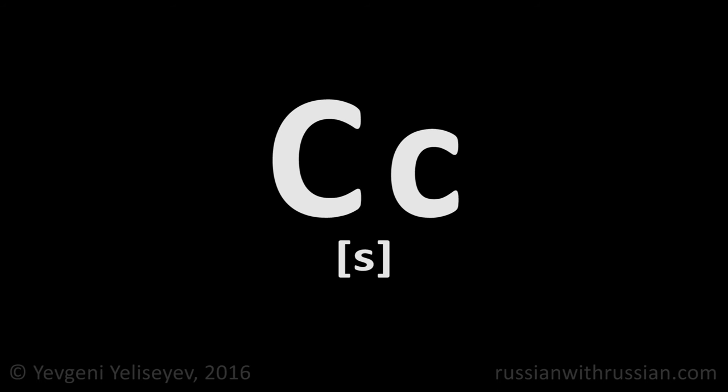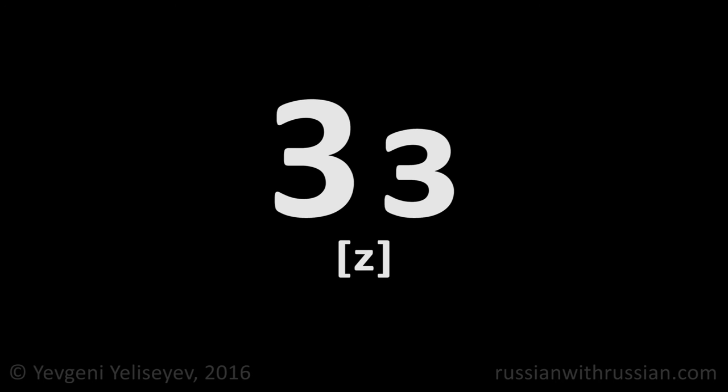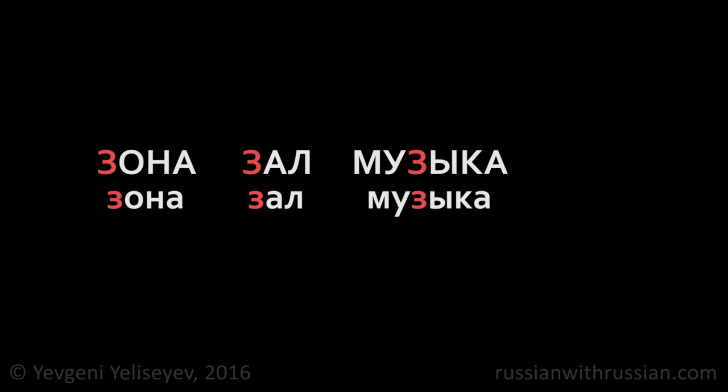This letter is called С. Normally it's pronounced as С. Unlike English, in Russian it never has the sound К. For example: СУМКА, СЫТЫ, САДЫ, АНАНАС. This letter, called З, is pronounced as З. Examples: ЗОНА, ЗАЛ, МУЗЫКА, КОЗЫ.